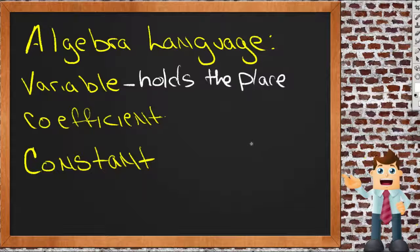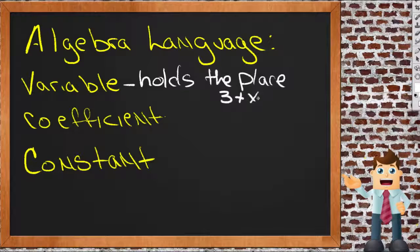So it holds the place. For instance, you might hear the statement 3 plus x equals 7. Now in this particular statement, x represents a very specific number. There's only one number I can put in here that will make this statement true. But x still holds the place of that number until I decide to put it in there.